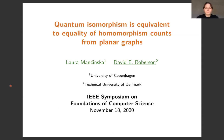We'll be talking about quantum isomorphisms, which are a relaxation of graph isomorphism based on quantum strategies for non-local games. Non-local games are the things that make up multi-prover interactive proof systems. The particular result I want to talk about is our recent proof that two graphs are quantum isomorphic if and only if they have the same number of homomorphisms from any planar graph.